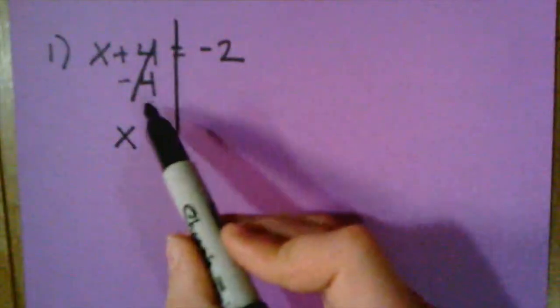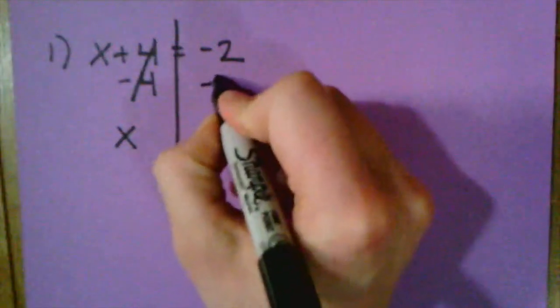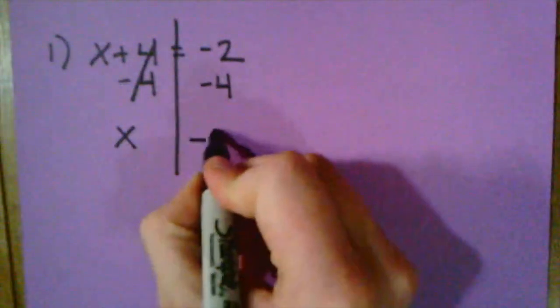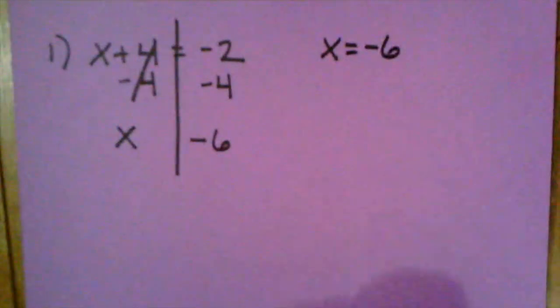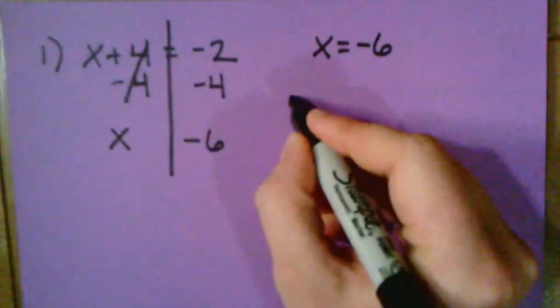Now using the golden rule, if I subtract four from the left side, I also need to subtract four from the right side. So I would have negative two minus four would equal negative six. This means that X equals negative six. And I can check this by plugging negative six back in my original equation for X.